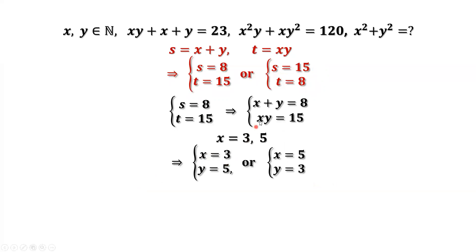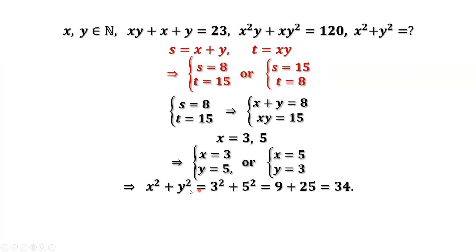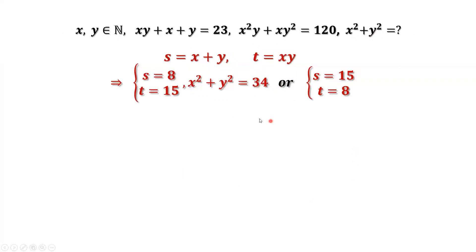We can use the quadratic formula or factor the left-hand side to find x equals 3 or x equals 5. When x equals 3, y equals 8 minus 3, which is 5. When x equals 5, y equals 8 minus 5, which is 3. We find two sets of solutions. The question asks for x squared plus y squared, and replacing x, y by 3 and 5 or 5 and 3 gives the same answer: 34.